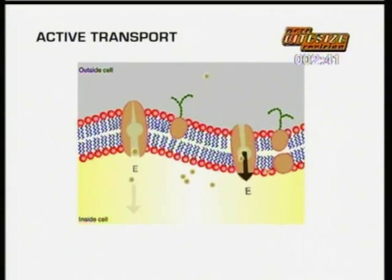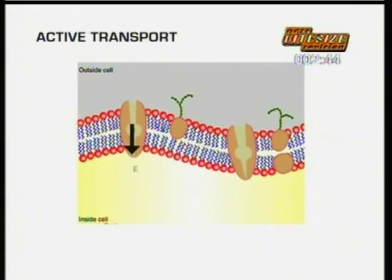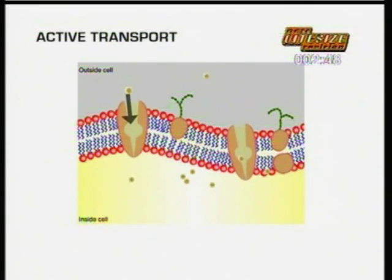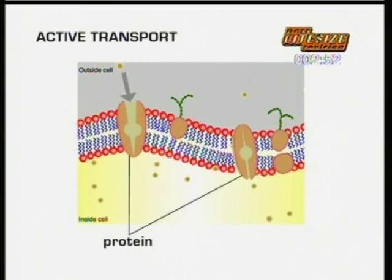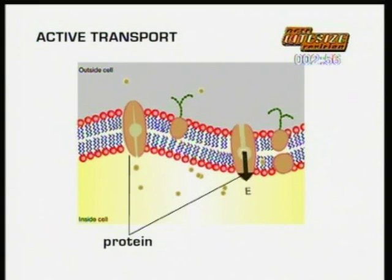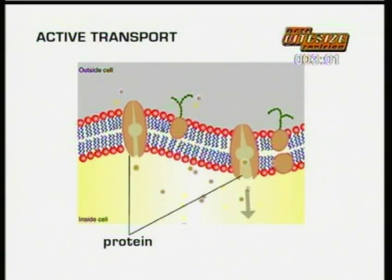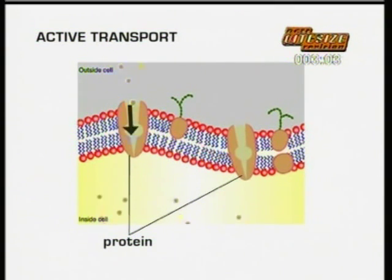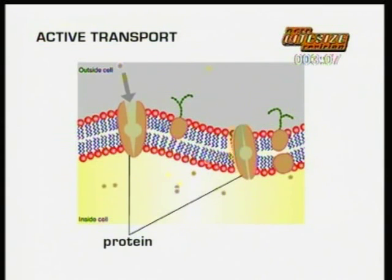Here, particles are moved from outside the cell, where there are fewer of them, to inside the cell, where there are more. This is done by carrier proteins that can pick up specific molecules and move them through the cell wall, against the concentration gradient, in the opposite direction to what would happen with passive diffusion or osmosis. This process requires the input of energy from the cell, which is supplied by respiration.